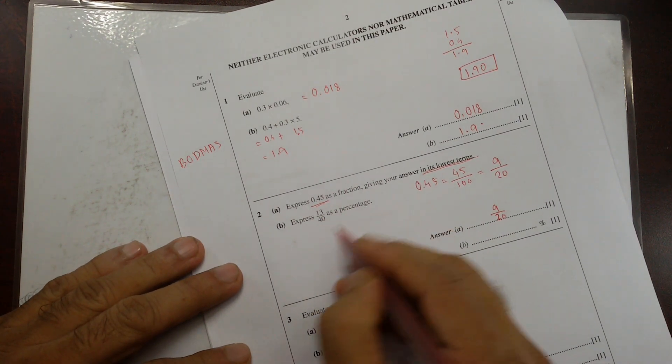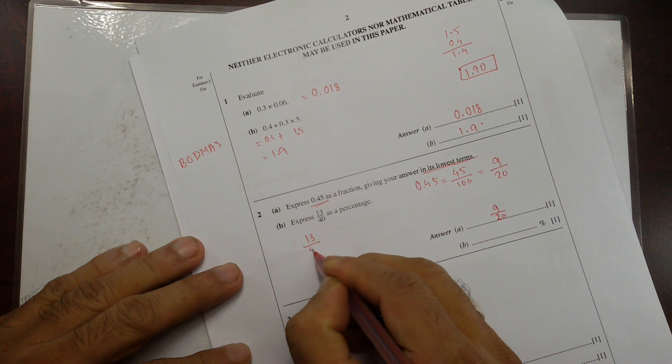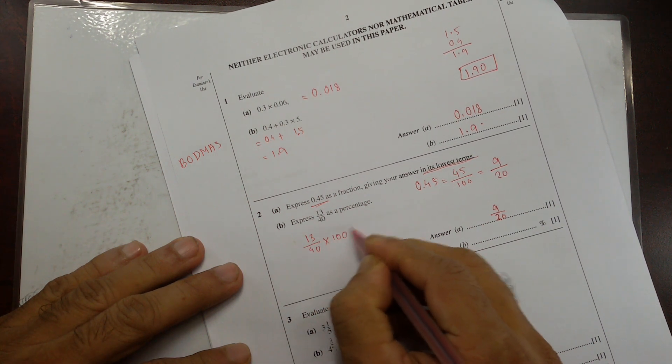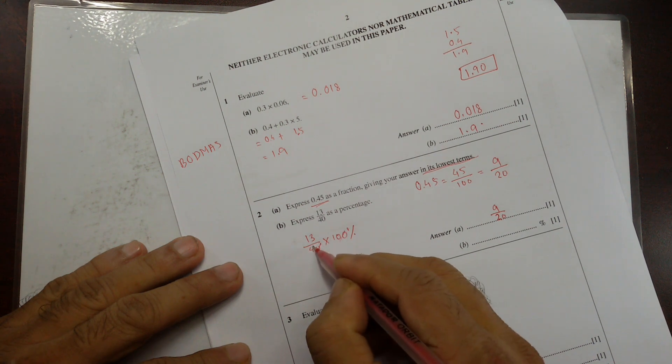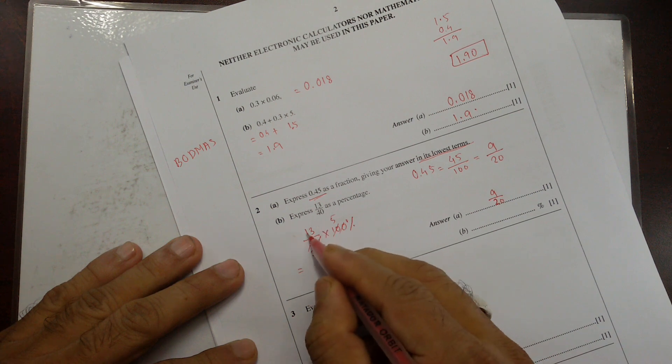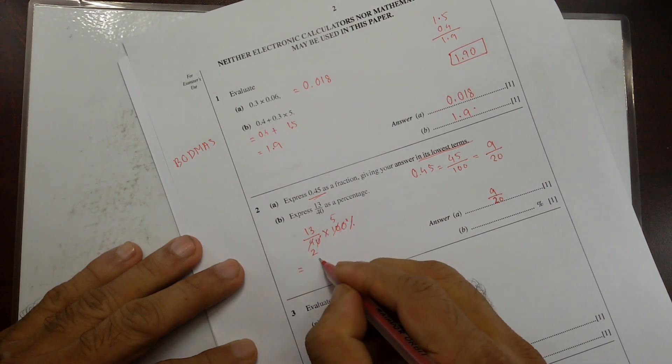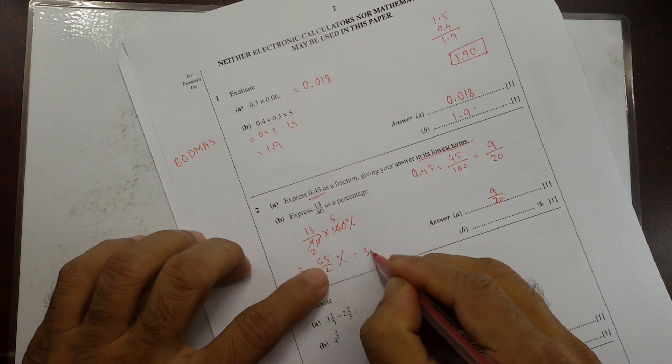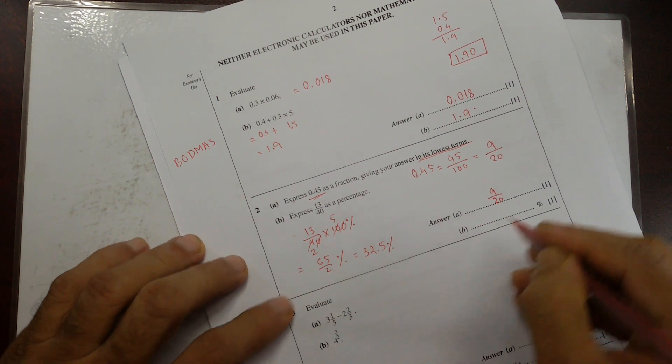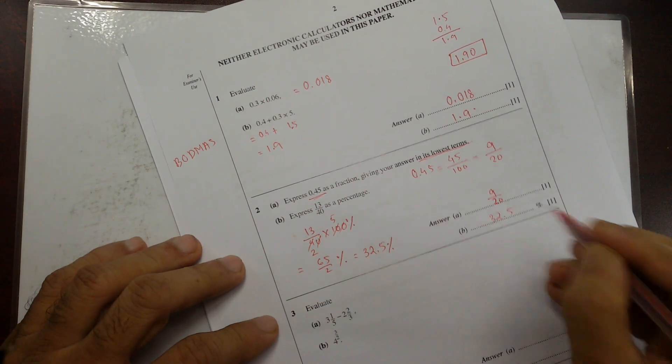13 by 40 as a percentage. So 13 by 40 times 100 percent. 100 divided by 100, that's 1. That's this cross out. That's going to be 5 and 2. So this is going to be 6, 13, 5, so 65 divided by 2. And that's actually 32.5 percent.